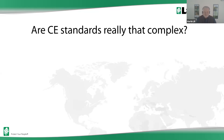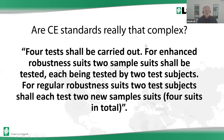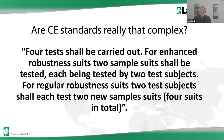It's a paragraph essentially explaining the number of samples that should be used for the required practical performance tests. This is the paragraph: 'Four tests shall be carried out. For enhanced robustness suits, two sample suits shall be tested, each being tested by two test subjects. For regular robustness suits, two test subjects shall each test two new sample suits, four suits in total.' Did you get that? No, me neither.